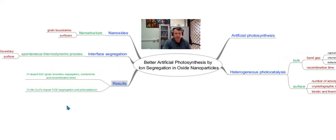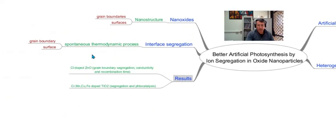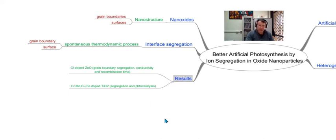We have two sets of results. The first is the segregation of chlorides in zinc oxide grain boundaries, the change in conductivity, the increase of recombination time, and the consequences for photocatalysis. The second group of results is for transition metal-doped titanium oxide — the segregation and photocatalysis.